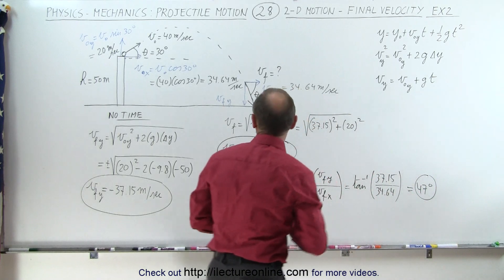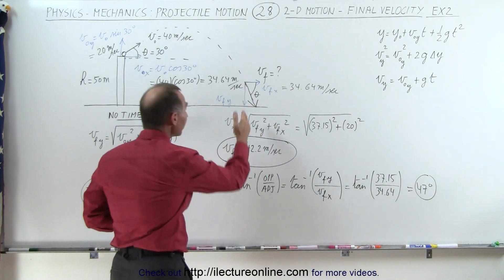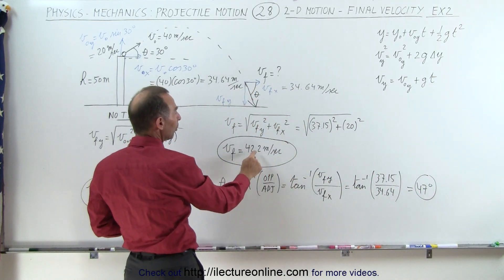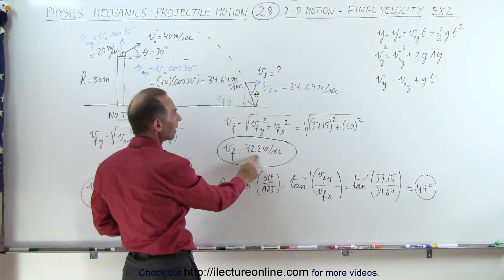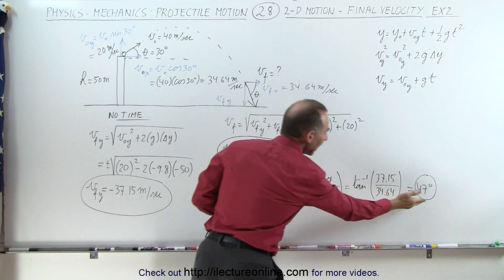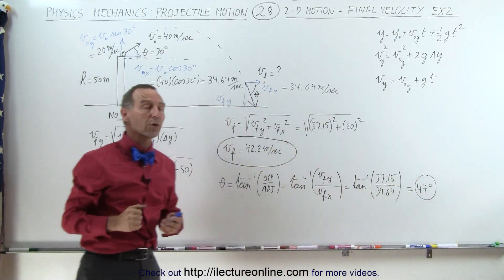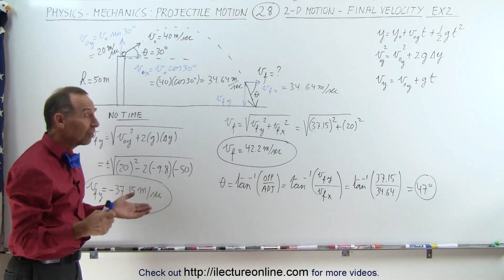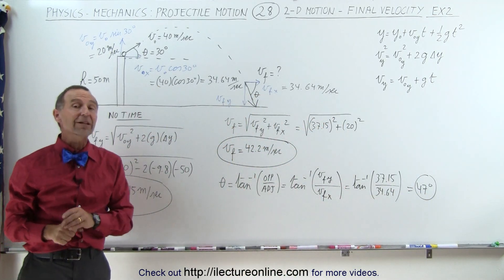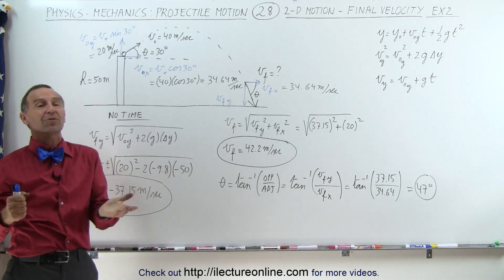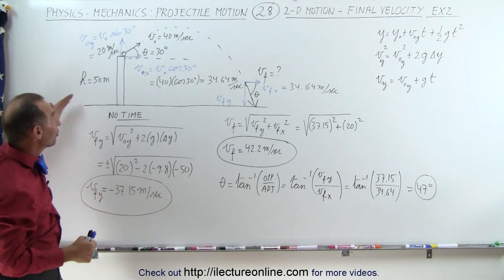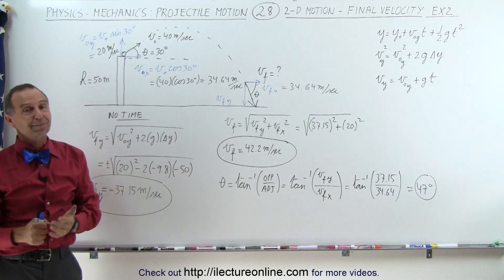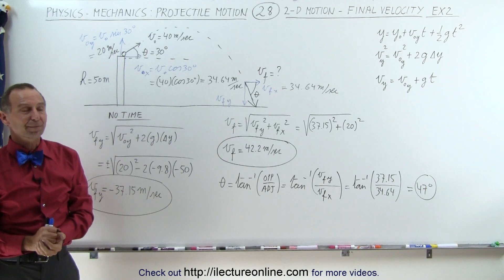The final velocity is 42.2 meters per second at an angle of 47 degrees below the horizontal. That's how we find the final velocity of a projectile fired at an angle when it reaches the ground.